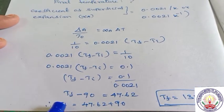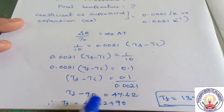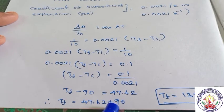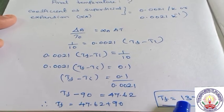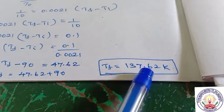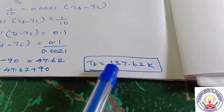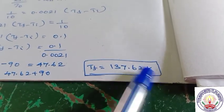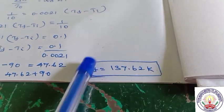So Tf equals 47.62 plus 90, which gives 137.62 Kelvin. Therefore, 137.62 Kelvin is the final temperature of the copper rod.